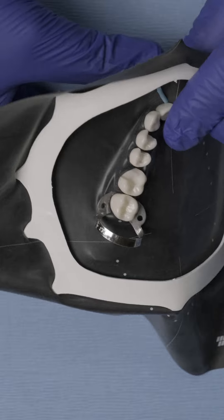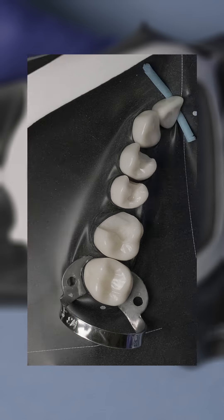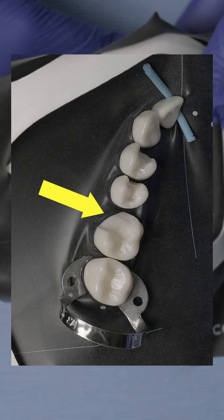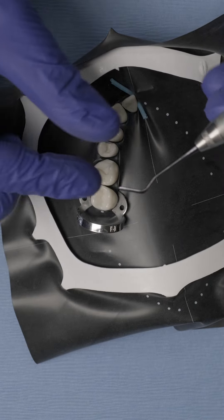As you can see here on this model, my rubber dam is actually covering some areas that I need access to. An easy way that I have found to go about this issue is just by using a composite instrument.